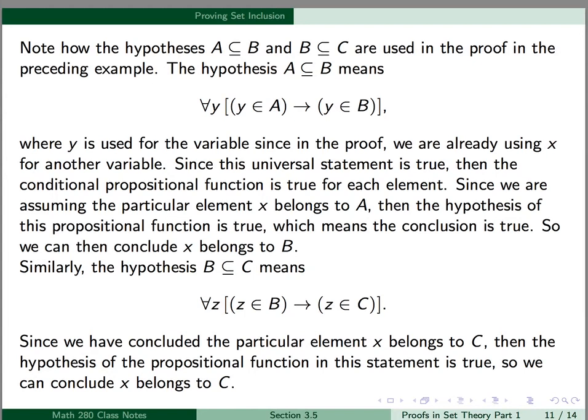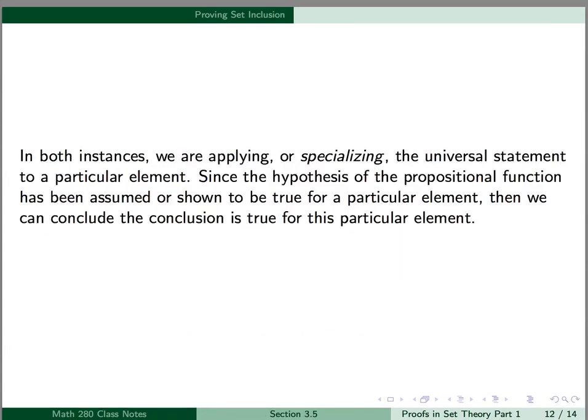Similarly, the hypothesis B is a subset of C means for all z, z is an element of B implies z is an element of C. Since we've now concluded that the particular element x belongs to B — there's a typo in the notes, it should be B instead of C — then the hypothesis of the propositional function in this statement is true, so we can conclude that x belongs to C. In both instances, we are applying or specializing the universal statement to a particular element. Since the hypothesis of the propositional function has been assumed or shown to be true for a particular element, we can conclude that the conclusion is true for this particular element.